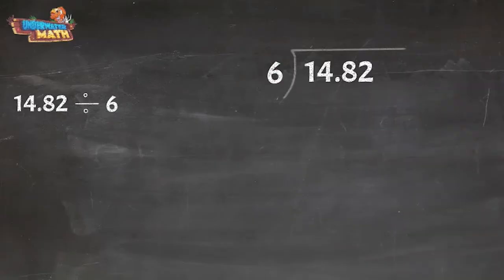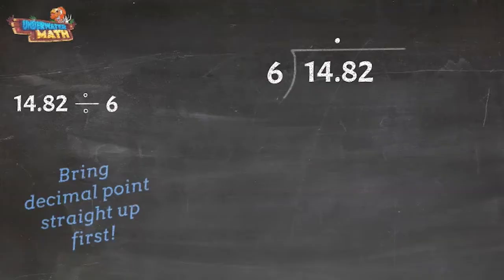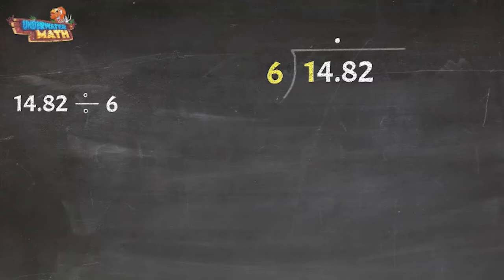We simply bring that decimal point straight up from the dividend into our quotient. Then we divide like normal. First we see if six goes into one, and since it does not, we move to one digit to the right.